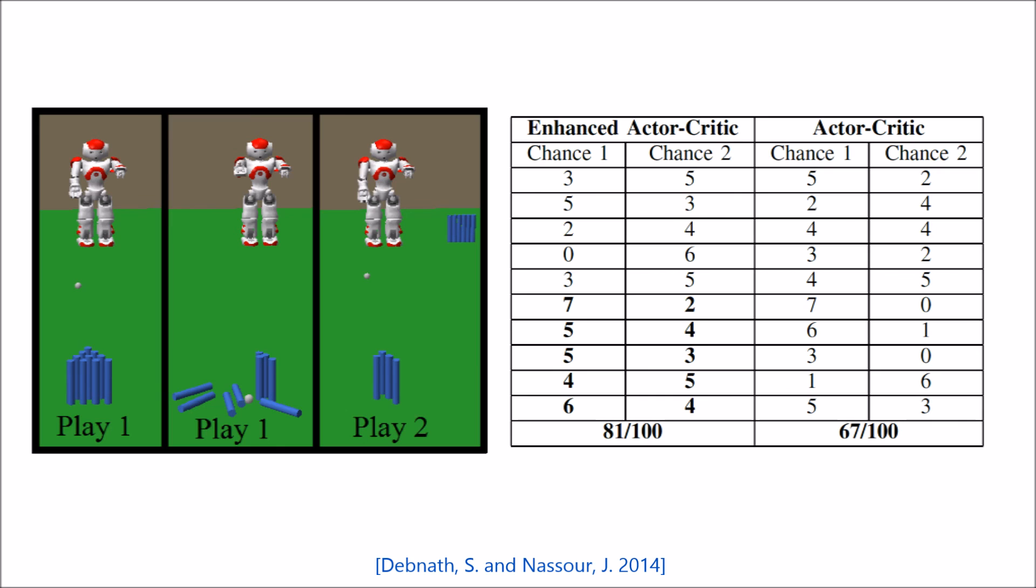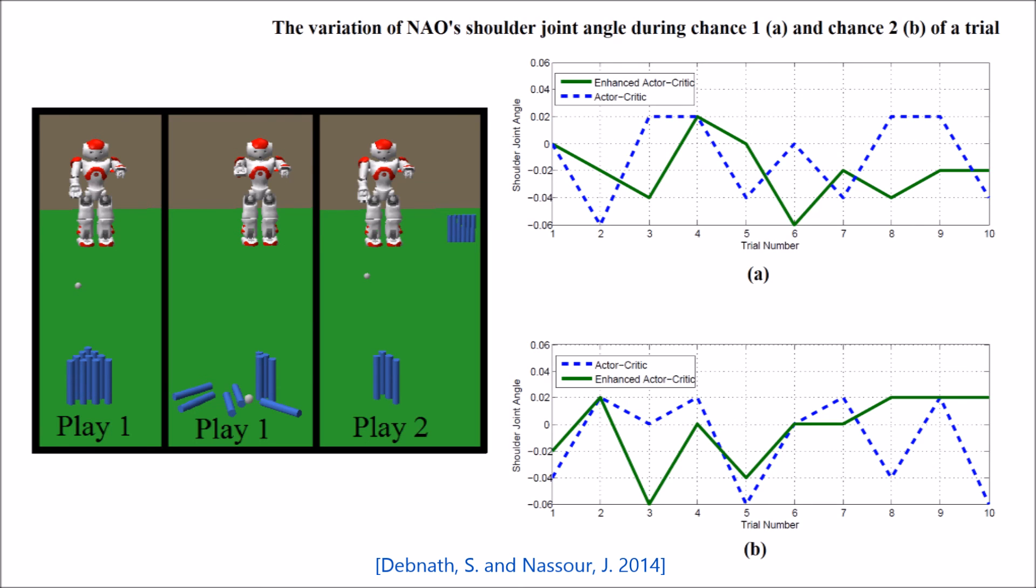The second problem was to make the humanoid robot learn how to play bowling in a simulated environment. In this experiment, the overall performance was better using the enhanced actor-critic method. Moreover, the robot had been successful in finding out a reasonable policy, given the limited number of trials, unlike the actor-critic method. This suggests that the enhanced actor-critic method has a faster rate of learning.